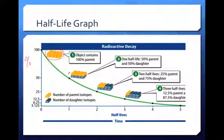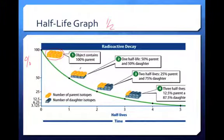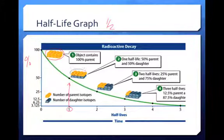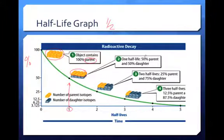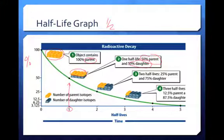After you go through one half-life, you lose half of the original material. After one half-life, we've reduced the amount of original, or parent, material in half. Now we have 50% parent — original material — and 50% daughter material that's created from the original. Parent and daughter will always add up to 100.